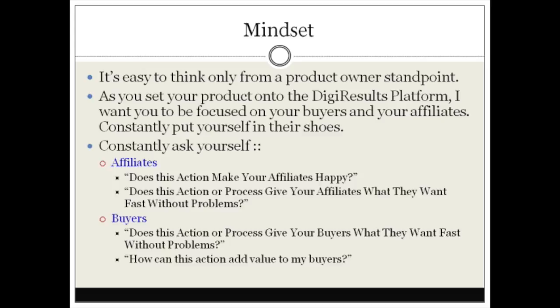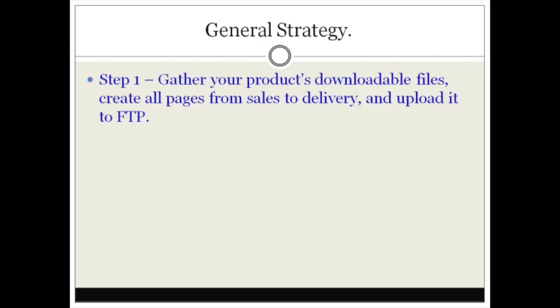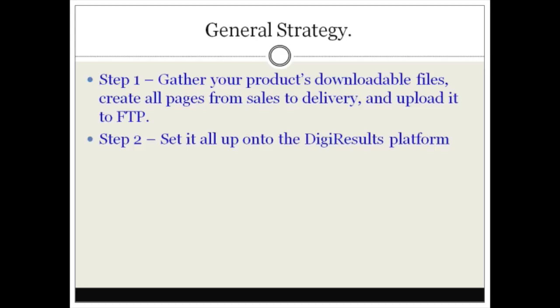Here's the general strategy. Step one: gather your product downloadable files, create all the pages from sales to delivery to thank you pages, and upload them via FTP to your website. Step two: set everything up on the Digi Results platform. Step three: add an affiliate program, which is part of Digi Results, but I'm going to show you how to take it further and utilize the Digi Results affiliate system.